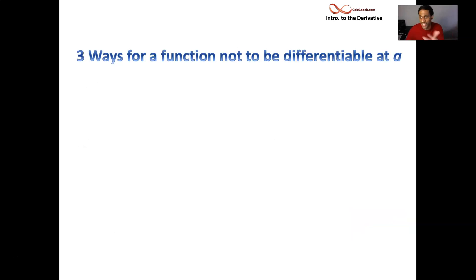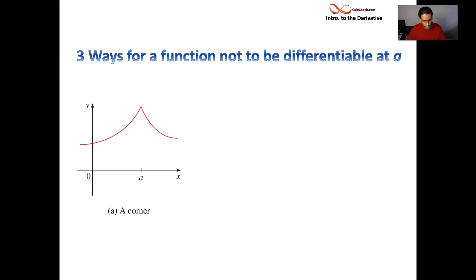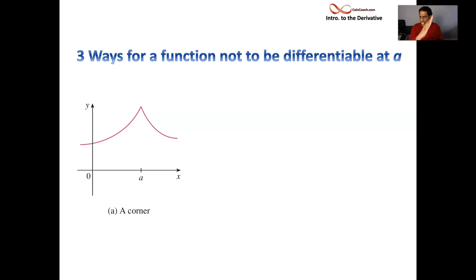We talked about being differentiable — this limit existing. What does it mean for it not to exist? What does it mean for a function to not be differentiable? If you're looking at a graph, how can you tell? If your graph has a corner — sometimes called a cusp — your right-hand limit of the slope is headed to positive values, and then very abruptly they switch to being negative. That sharpness is not differentiable. What we need is smoothness. Differentiability is about the function graph being smooth. You're not differentiable if you have a corner.